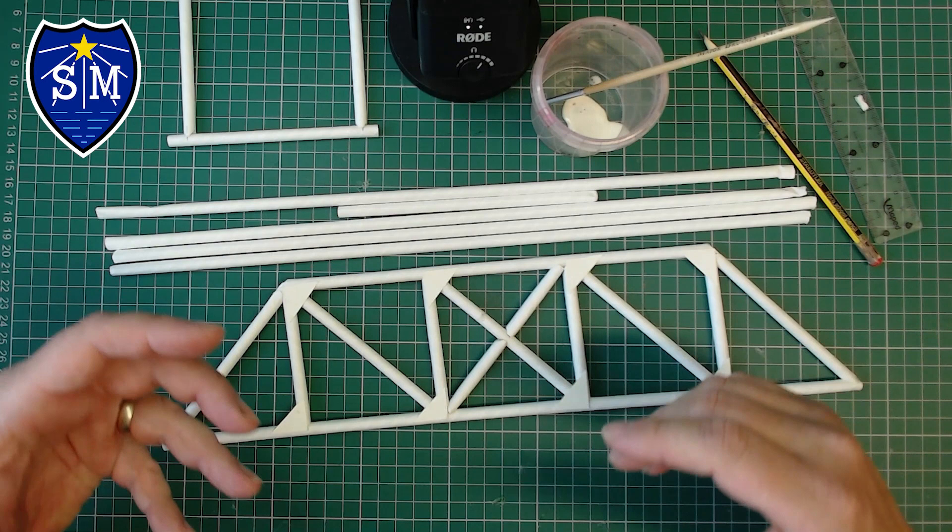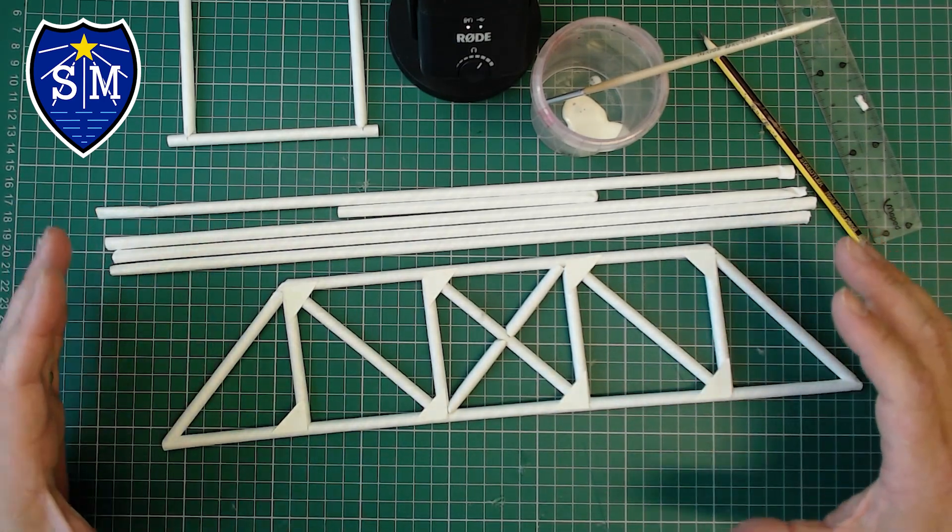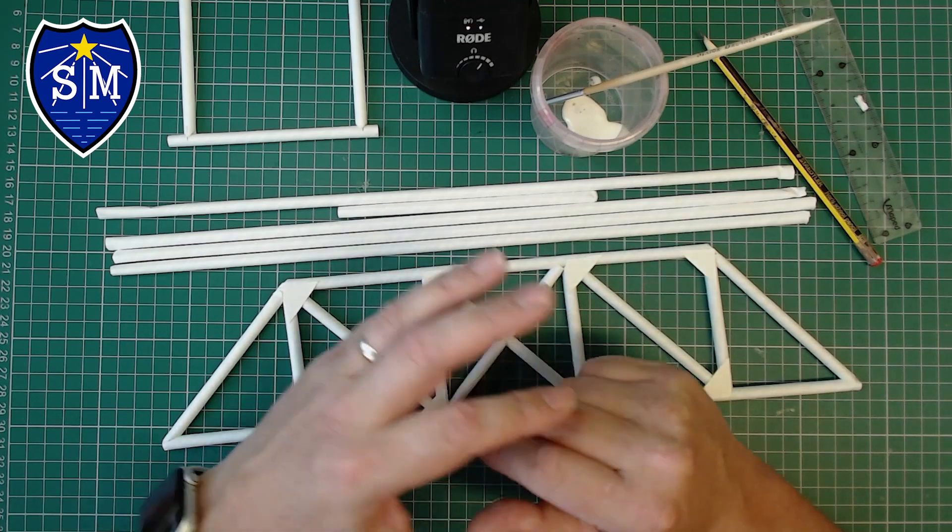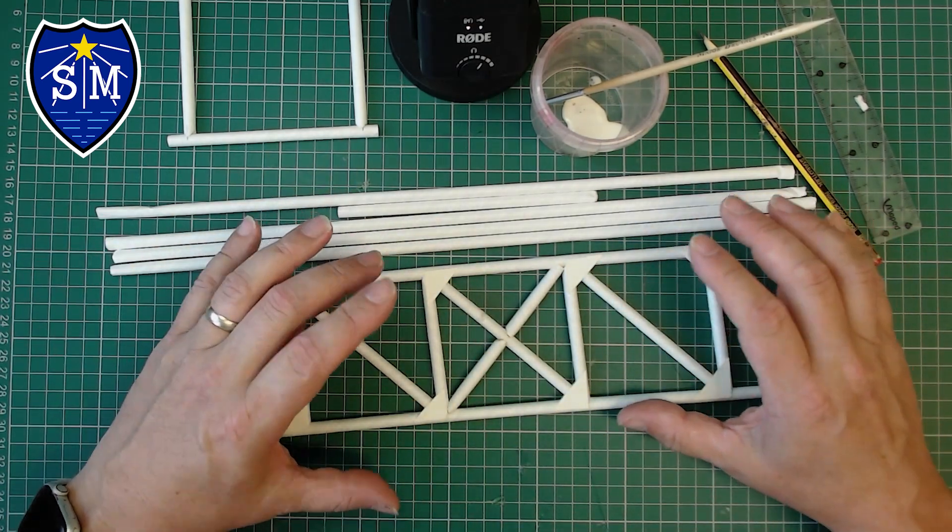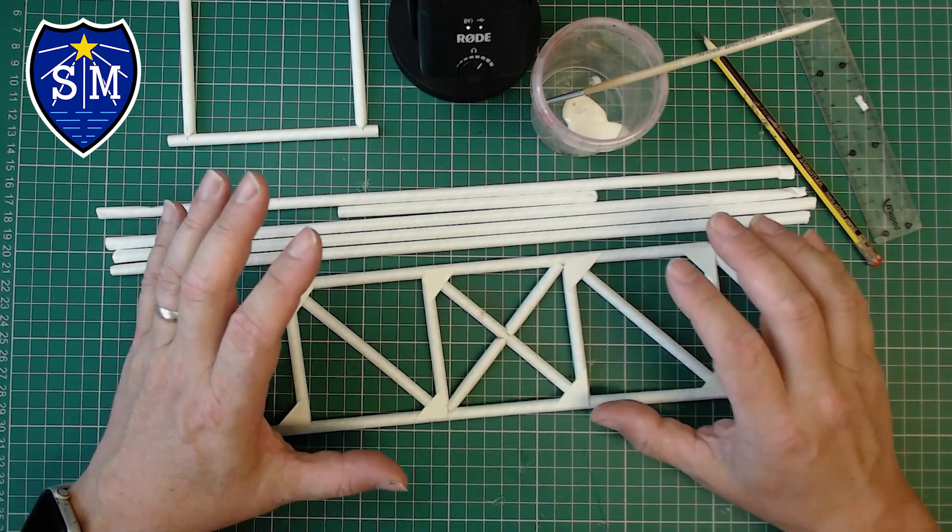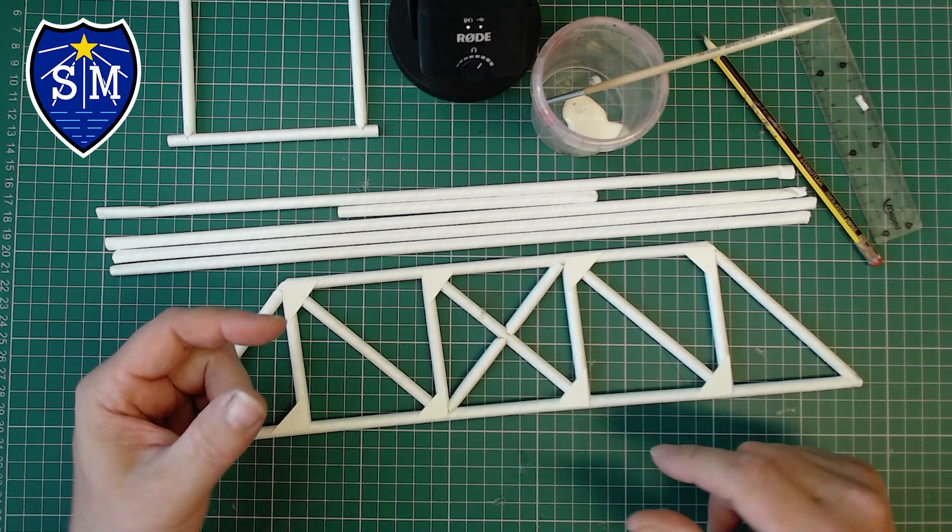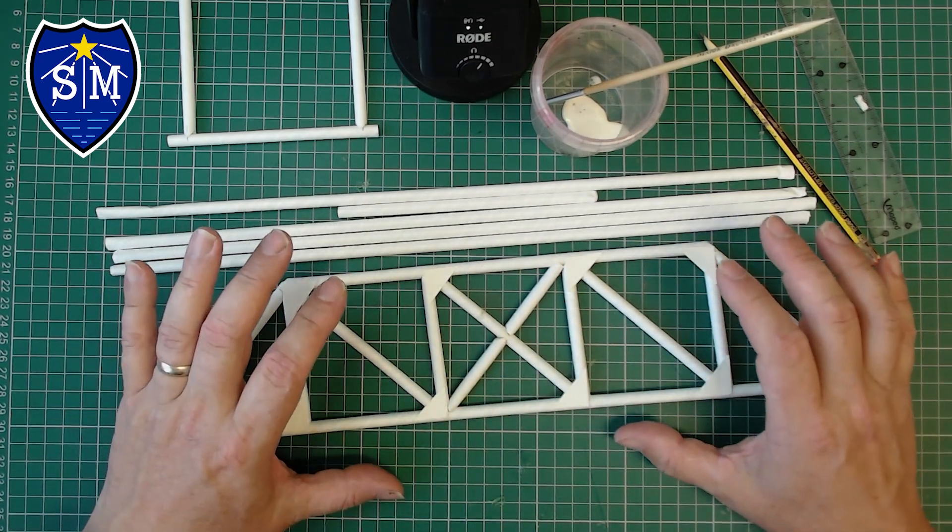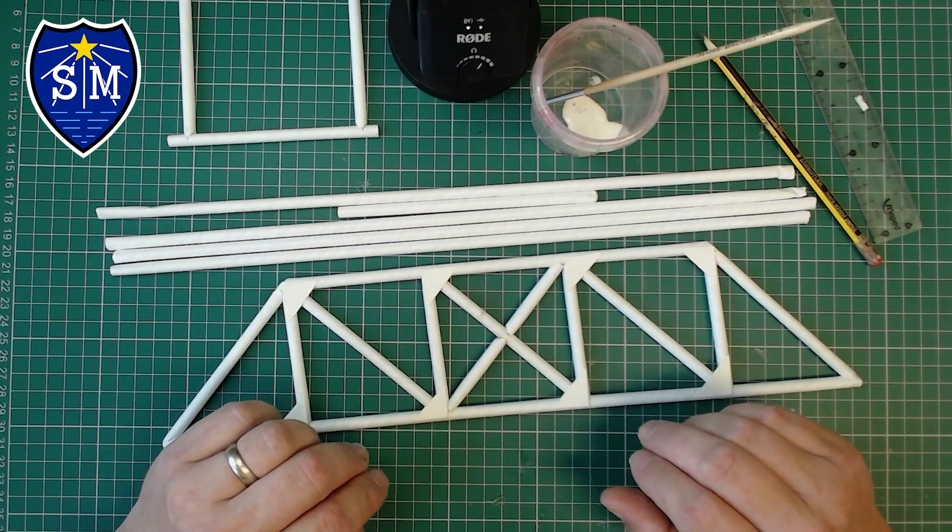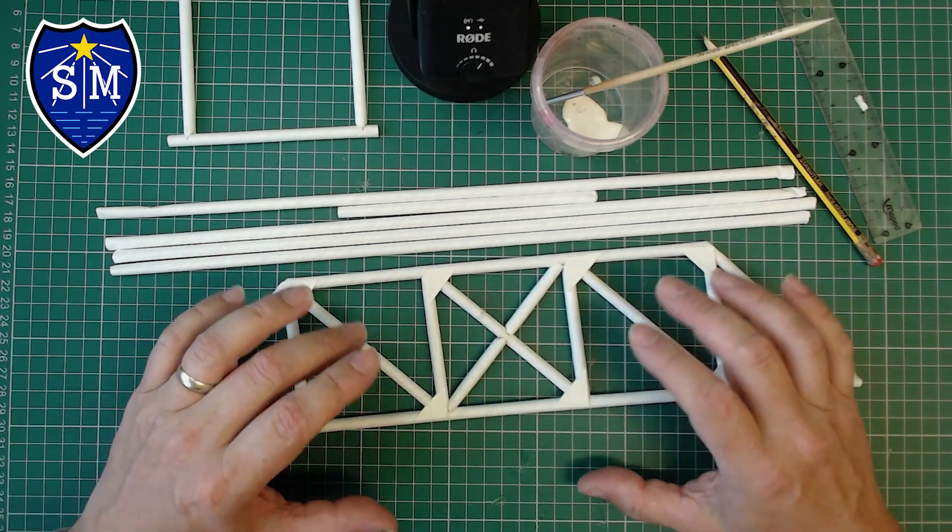Before we begin, there's a couple of top tips you need to think about when constructing from paper straws. First, try to work methodically step by step. Don't rush, take your time, be patient. If you rush, the chances are the thing will fall apart and you'll get frustrated.